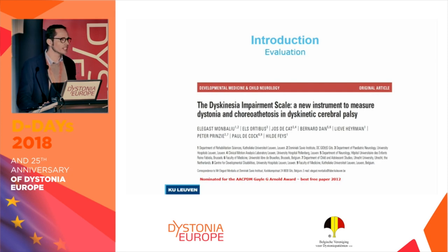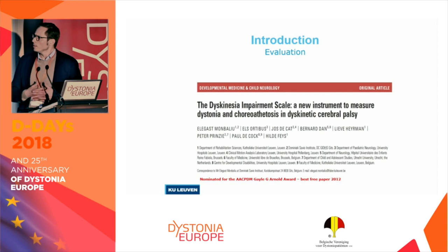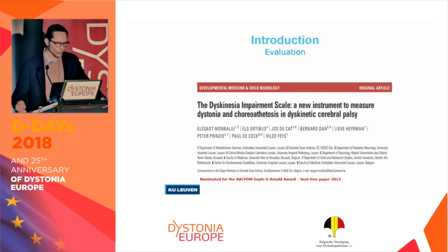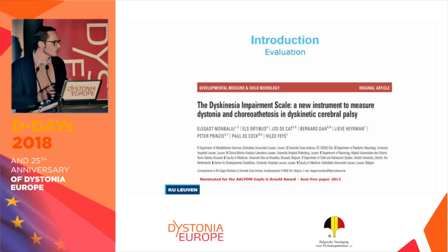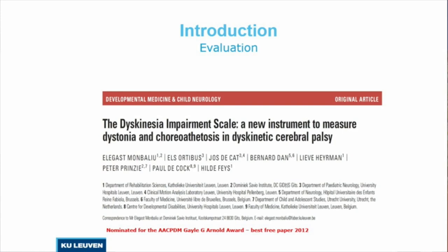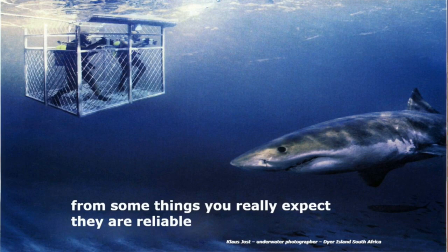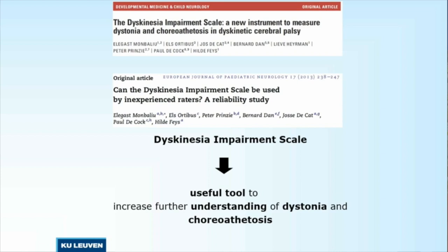We developed a new evaluation scale because the existing scales for measuring dystonia in childhood movement disorders were not good enough to capture all aspects. That's why we developed the Dyskinesia Impairment Scale — a scale that covers both dystonia and choreoathetosis in dyskinetic CP, also called dystonic CP. We conducted reliability studies: test-retest, inter-rater reliability, and content validity in both experienced and inexperienced raters. We found good to excellent reliability, and we used the DIS dystonia subscale and choreoathetosis subscale to increase understanding of these movement disorders in cerebral palsy.